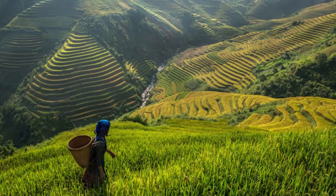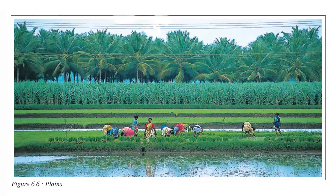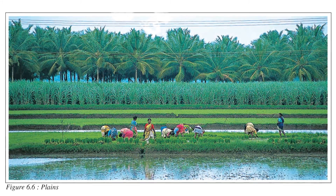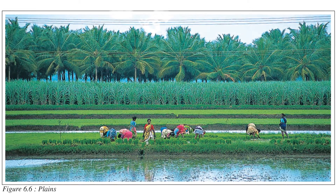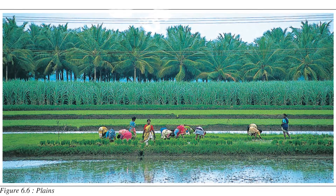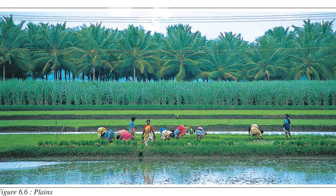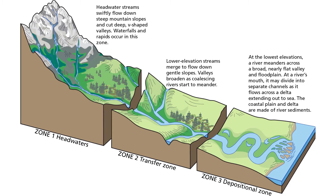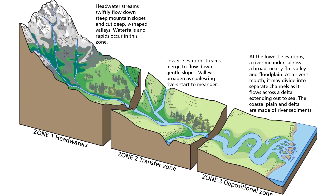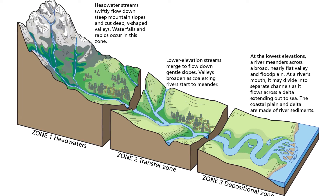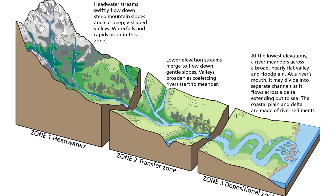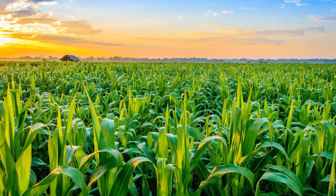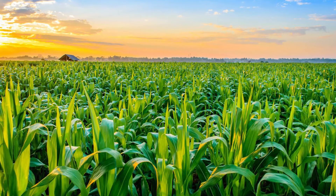Now let's talk about plains. Plains are large stretches of flat land. They are generally not more than 200 meters above mean sea level. Some plains are extremely level; others may be slightly rolling and undulating. Most plains are formed by rivers and their tributaries. The rivers flow down the slopes of mountains and erode them, carrying forward eroded material. They deposit their load — consisting of stones, sand, and silt — along their courses and in their valleys. It is from these deposits that plains are formed.